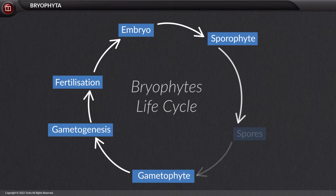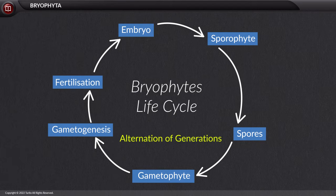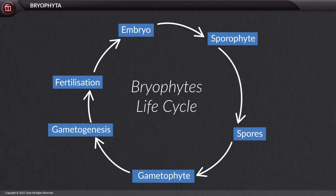The sporophyte generates spores, and these spores develop into a new gametophyte. This is called alternation of generations, defined as a type of life cycle of a plant or animal where sexual forms alternate with asexual forms.